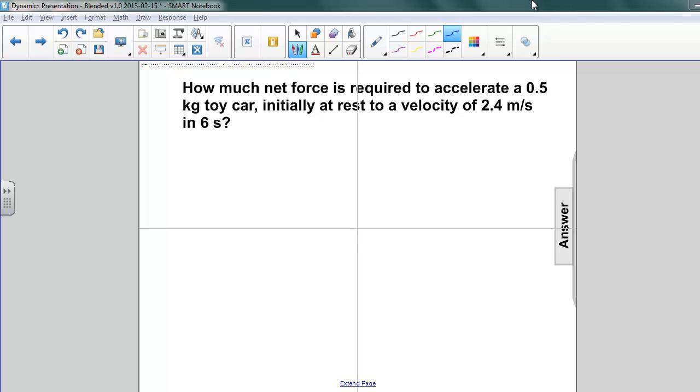All right, so let's look at the information that we have here. We have a mass of 0.5 kilograms. We also know that this toy car was at rest to begin with and it ends up at 2.4 meters per second, VF, and a time of 6 seconds. So we've got mass, an initial velocity, final velocity, and a time.